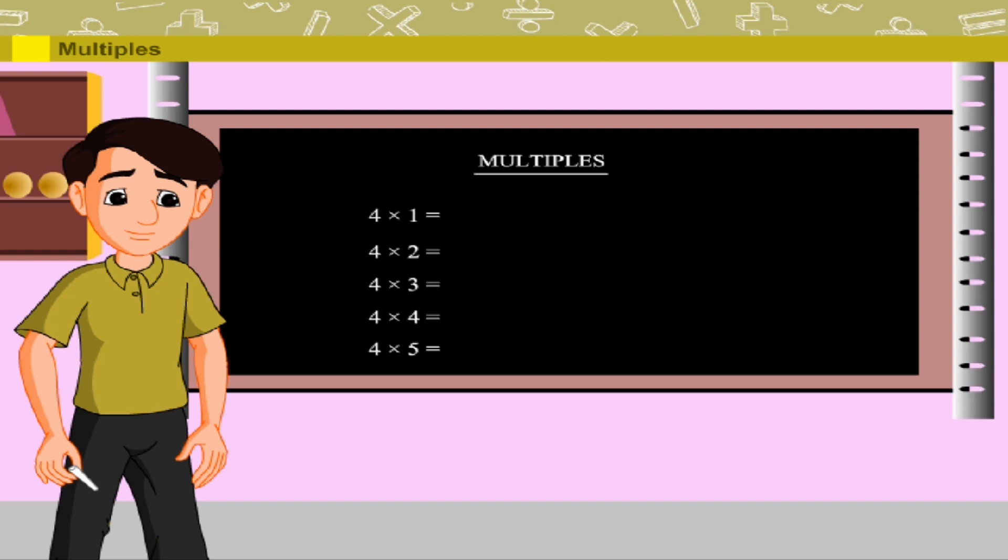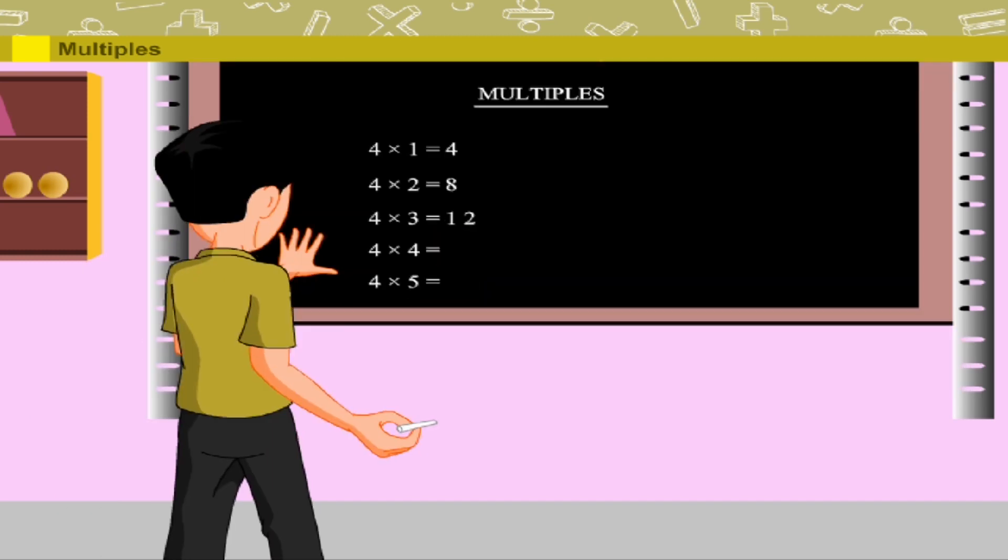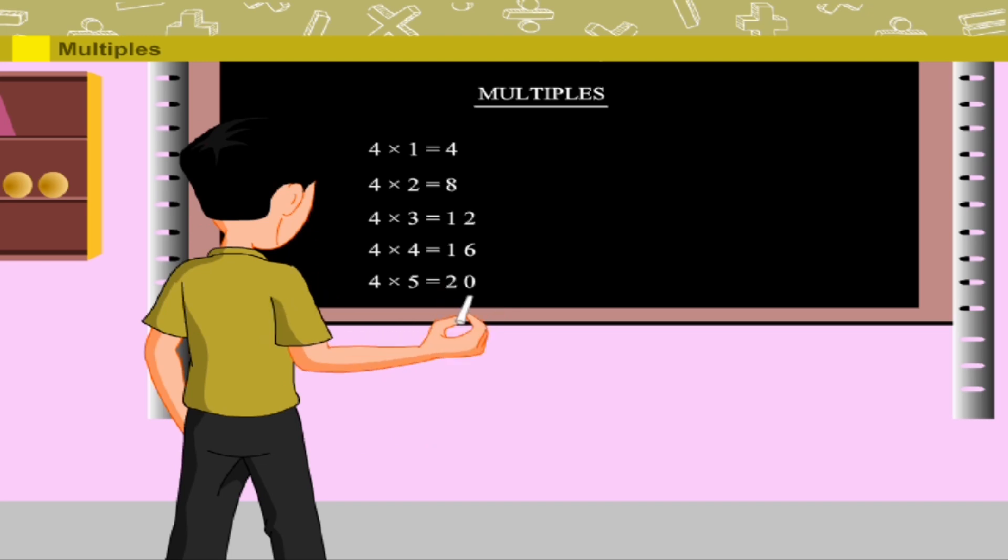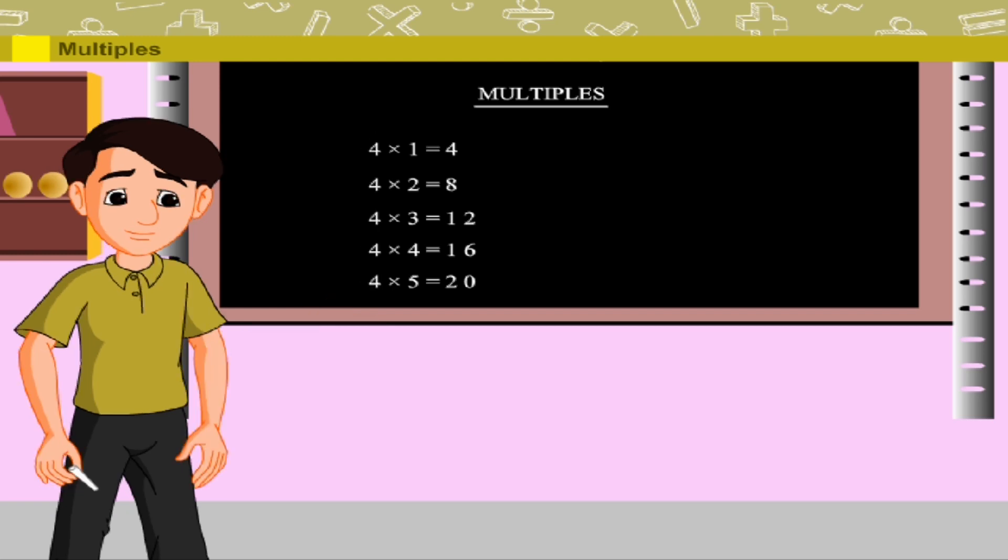So four, eight, twelve, sixteen, and twenty are the first five multiples of four. Well done, Ramu.